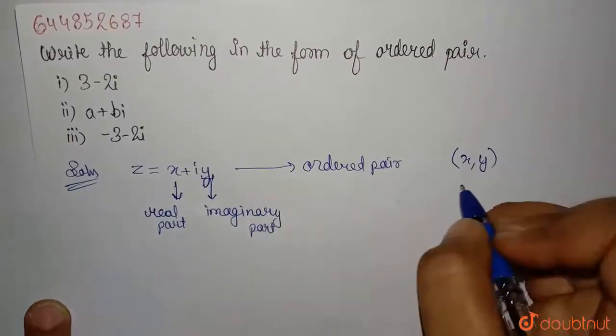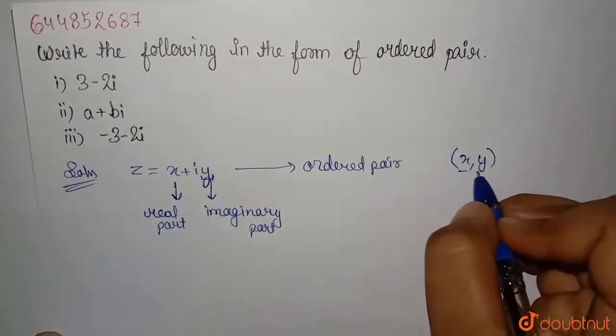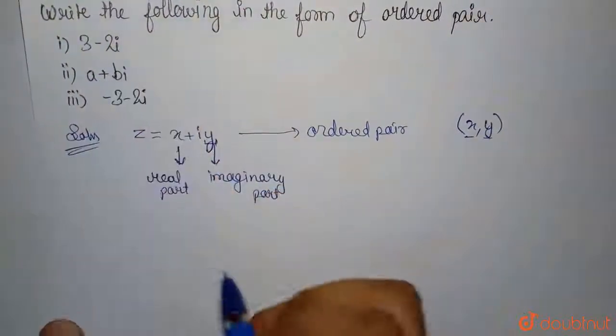And in the ordered pair form, you write real part comma imaginary part. So you can easily write for these three.